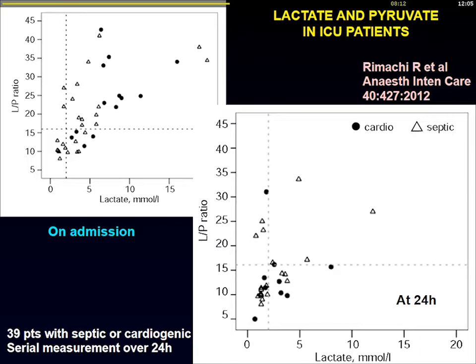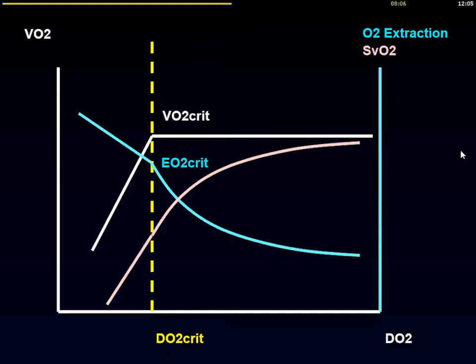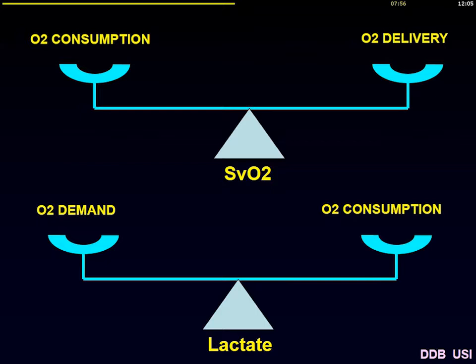SvO2 is again very important, but remember that SvO2 begins to drop well before the critical point. So a low SvO2 alone does not imply that your patient is in circulatory failure. Combining SvO2 and lactate is probably wiser than looking at SvO2 alone in these conditions.